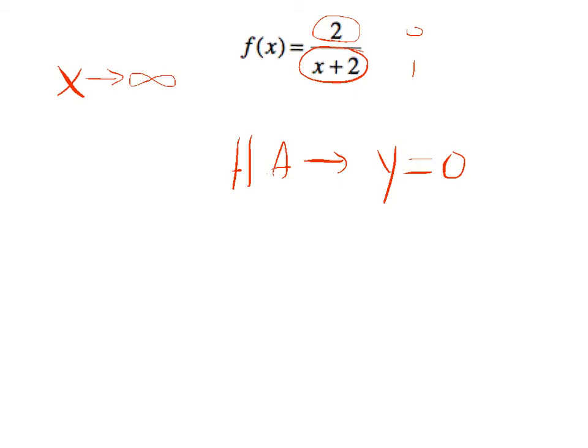Because as x gets infinitely big here, we're dividing by a larger and larger number, which makes it closer and closer to 0.